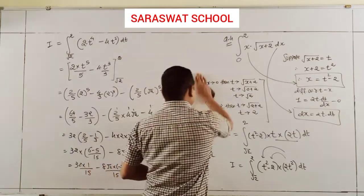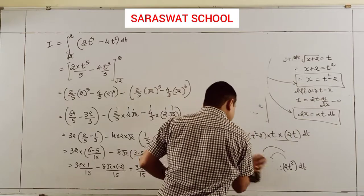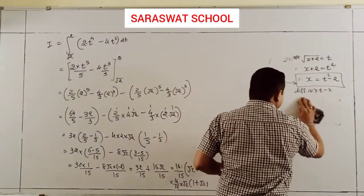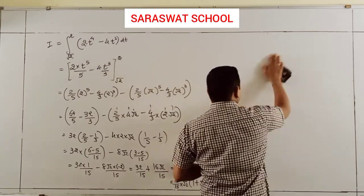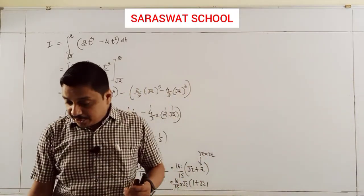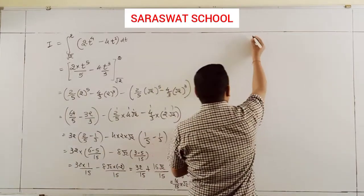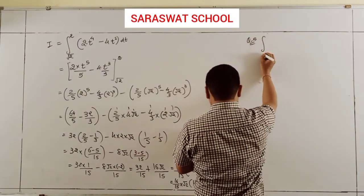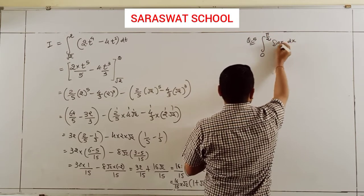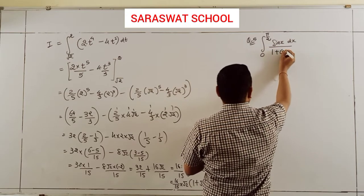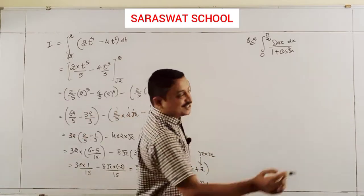Question 5: integrate from 0 to 90° of sinx dx divided by (1 + cos²x). Before starting this integration, think about which function has this derivative. Definitely it is cosx.